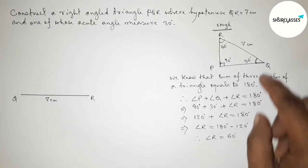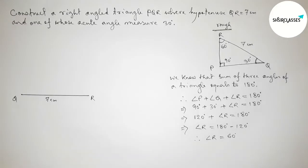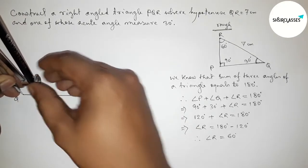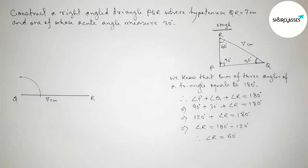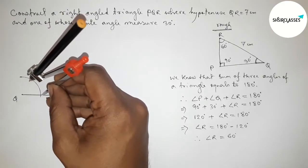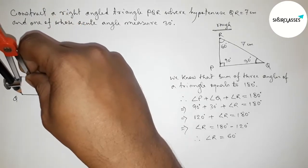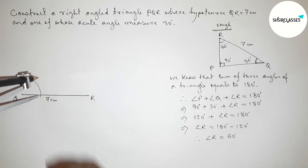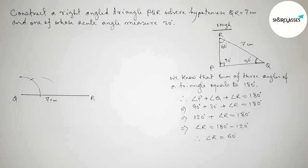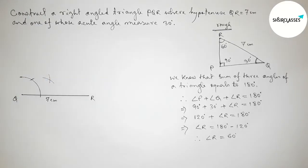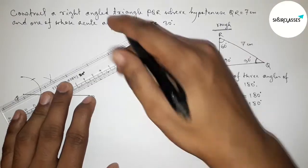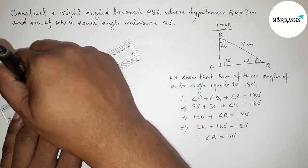Next, we have to draw a 30 degree angle at point Q with the help of a compass. Putting the compass on Q, taking any length, and drawing an arc. Then placing the compass on the arc with the same length and cutting another arc, and drawing the line to get a 30 degree angle.